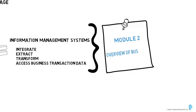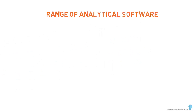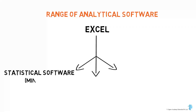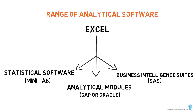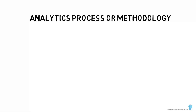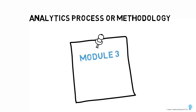This is something we will look into in great detail in the next module, where we outline the business analytics model. The range of analytical software spans from relatively simple Excel, right up to statistical software like Minitab, and more complex business intelligence suites like SAS, or predictive tools and reporting and analytical modules of enterprise systems like SAP or Oracle. What remains common despite your analytical tool of choice is the analytics process or methodology.